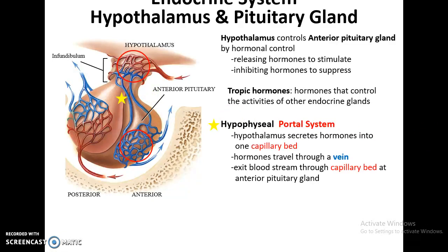The hypothalamus either releases hormones that stimulate secretion of a particular hormone by the anterior pituitary gland, or a hormone that inhibits or suppresses the secretion of a specific hormone by the anterior pituitary gland. Hormones that control other glands that secrete hormones are called tropic hormones.